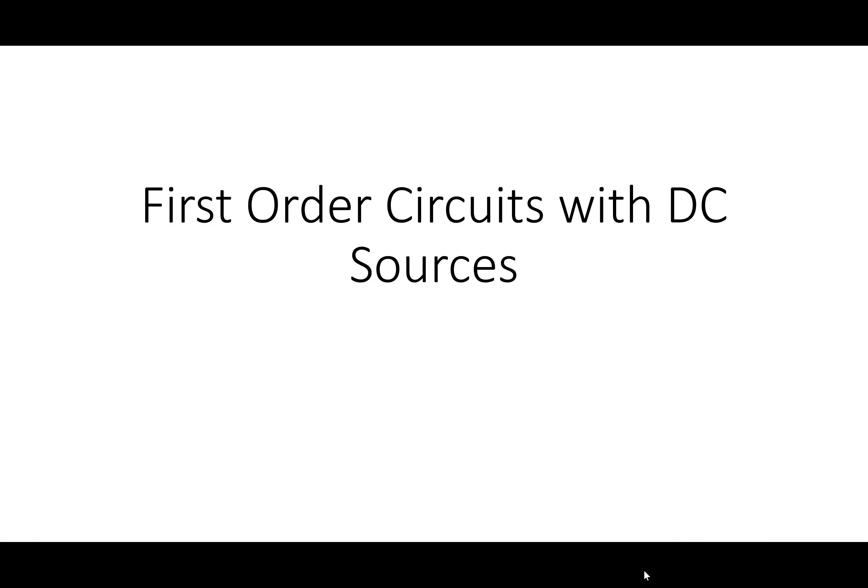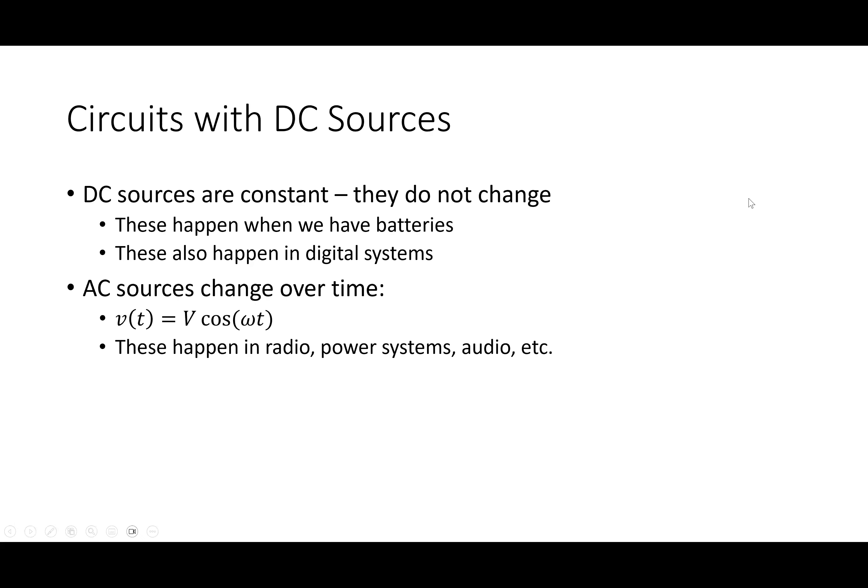There was a question about what first-order circuits are — you were supposed to learn that in Circuits 1. So what does it mean to be a DC source? Direct current. If you had to describe it to your mom in simple terms: it's constant, it doesn't change over time. A battery is a DC source. An AC source changes with time — it has some kind of fluctuation.